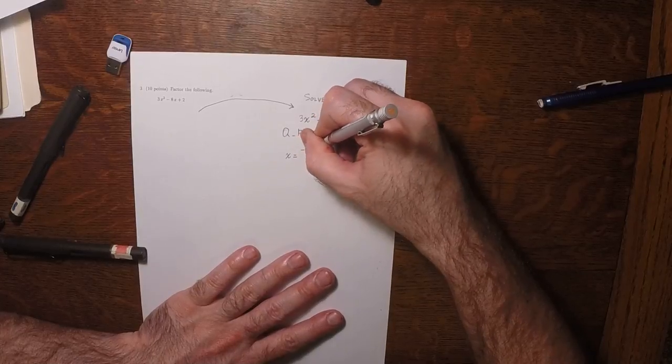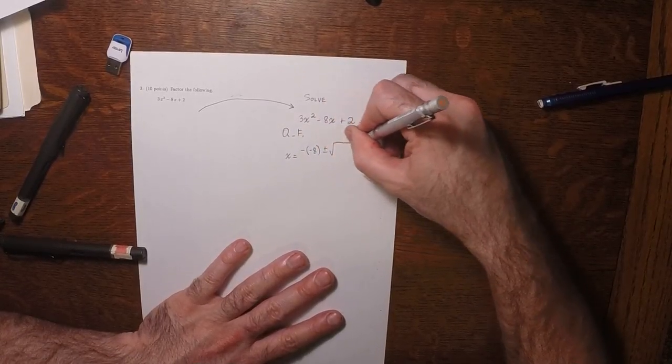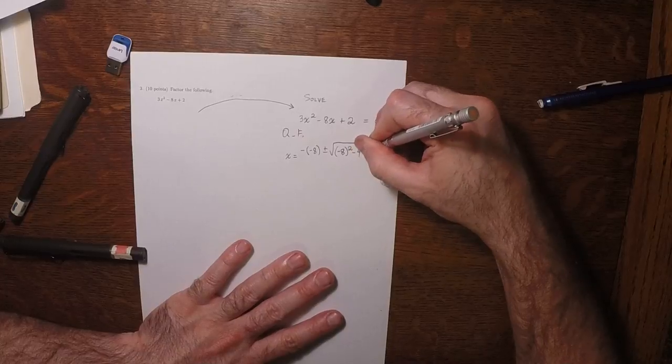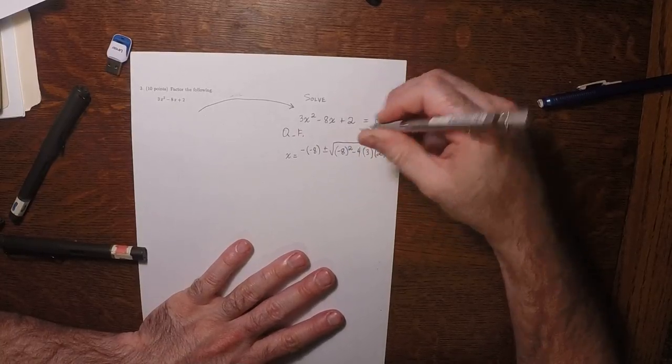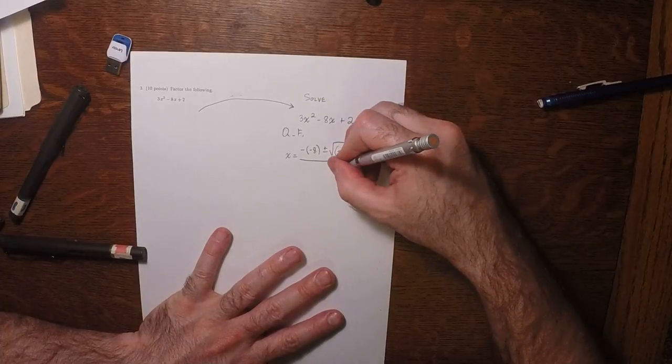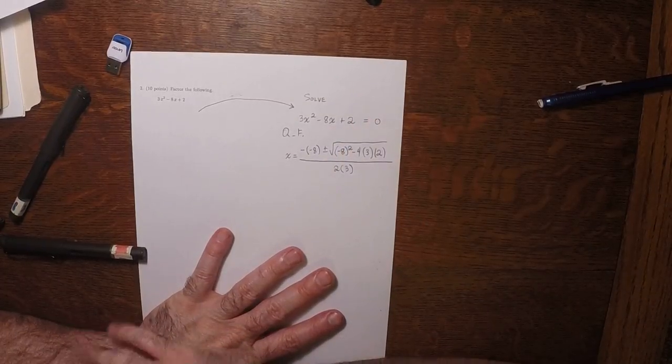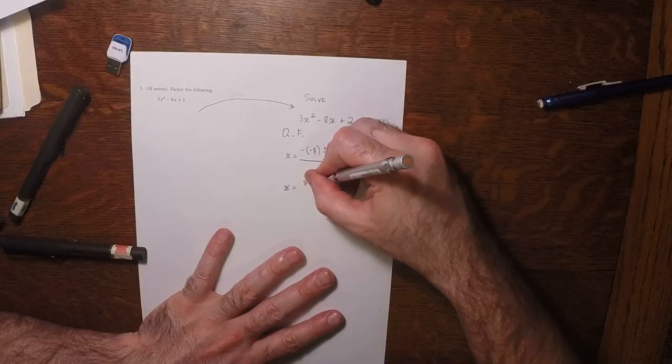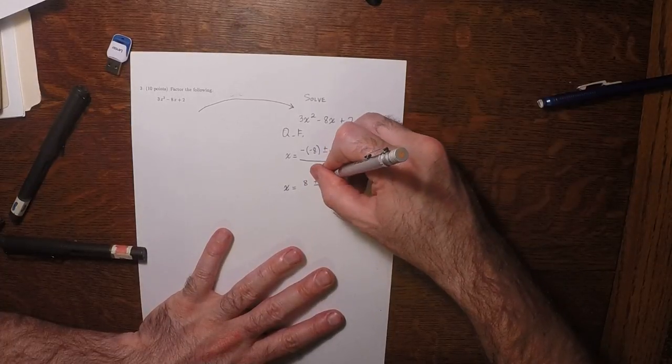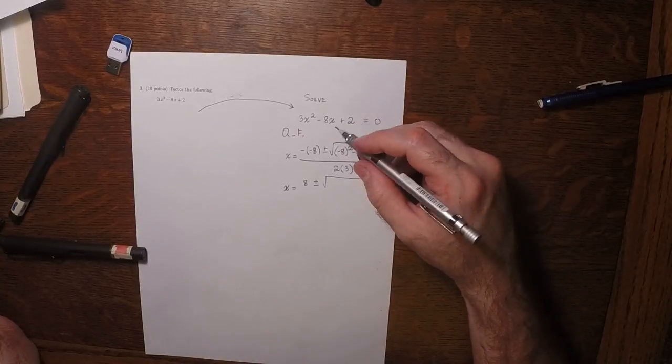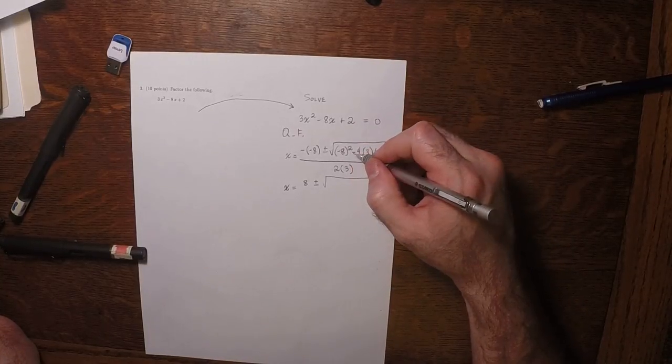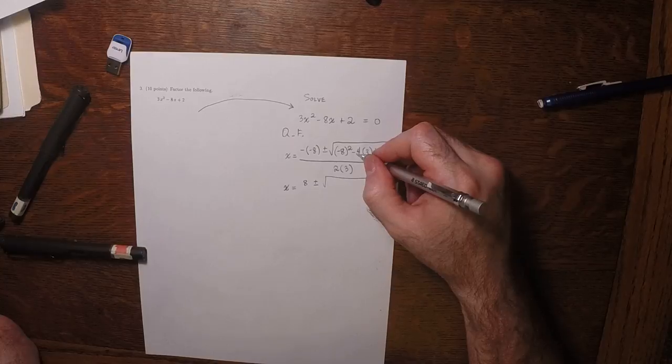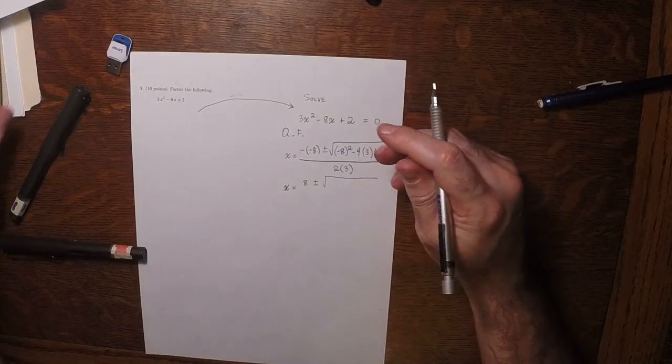So x is negative negative 8, plus or minus the square root negative 8 squared, minus 4 times 3 times 2, all of this over 2 times 3. So x is 8 plus or minus the square root, well how much is this? So that would be 64 minus 24. So let's verify that with the calculator.